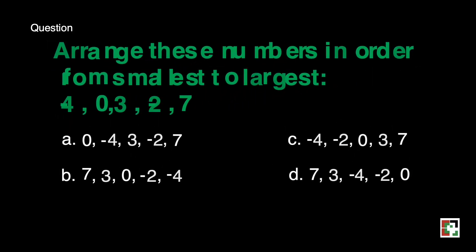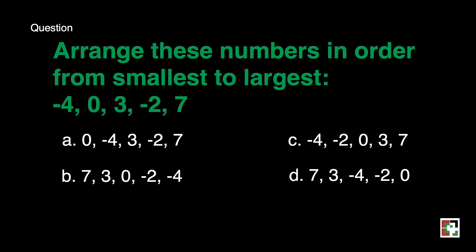Next question. Arrange these numbers in order from smallest to largest: negative 4, 0, 3, negative 2, and 7. Is it A? Is it B? Is it C? Or is it D? Our answer is letter C. That's negative 4, negative 2, 0, 3, and 7. So we have to have all the negative integers first, then 0, then of course the counting numbers or the positive numbers.